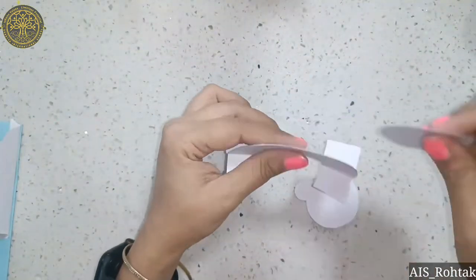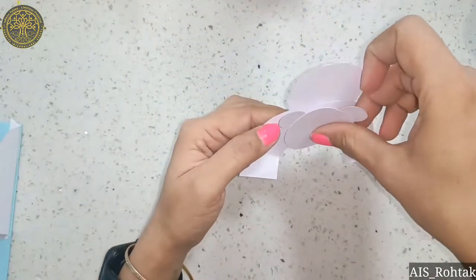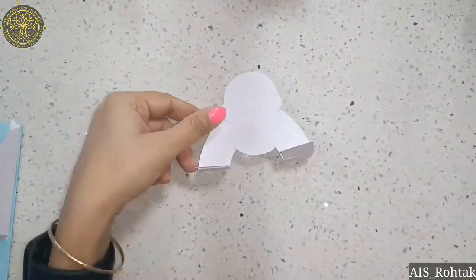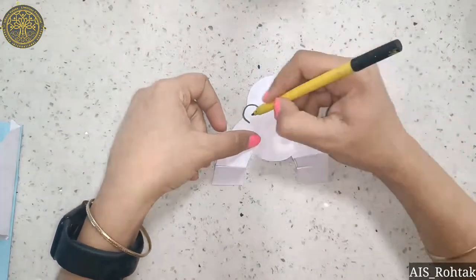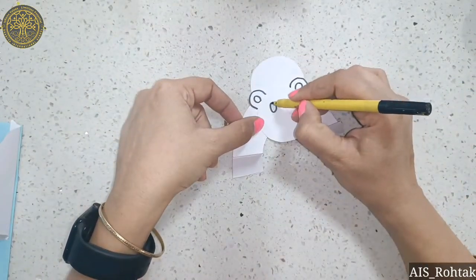Then paste the tail and paste the face here. Now we draw some outline, eyes, nose, and mouth around.